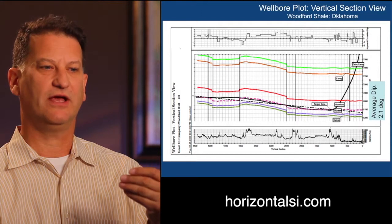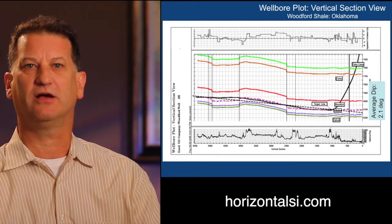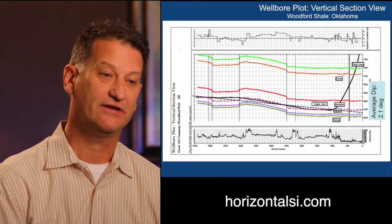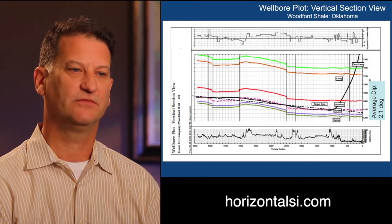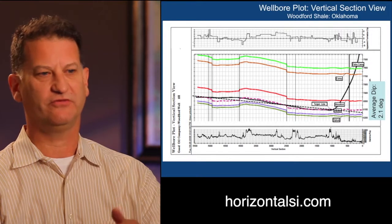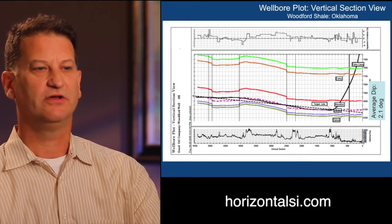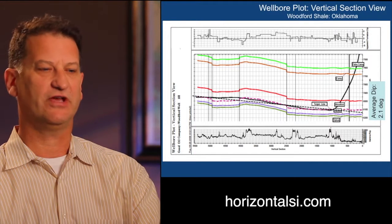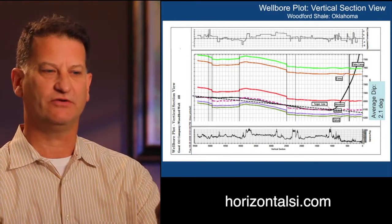So we're going to drill back up toward the black dash line, which is the target line, the average dip line. And sure enough, as they drill back up toward that target, they cut a fault, which brings the section back to your average dip line.